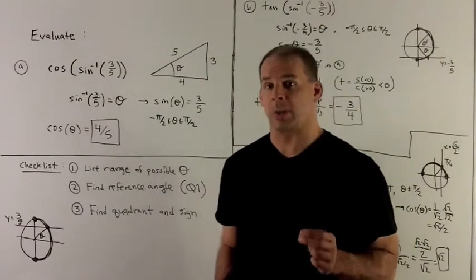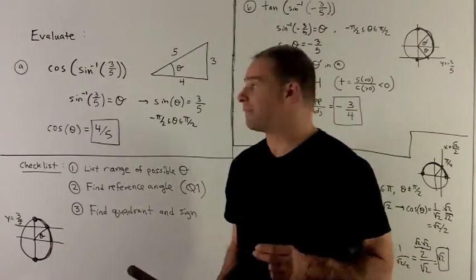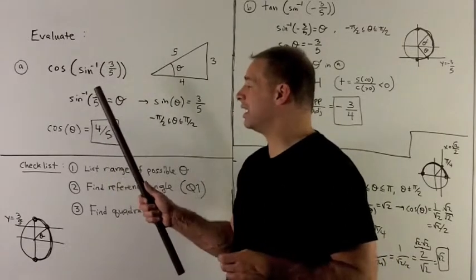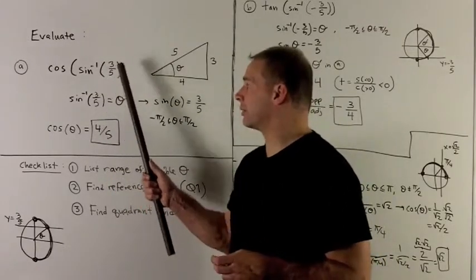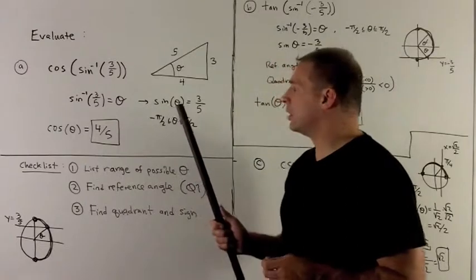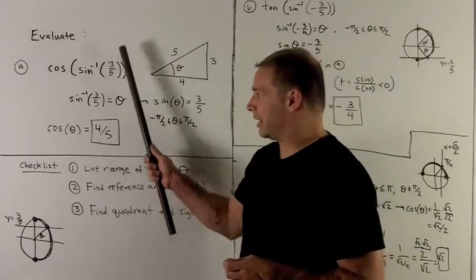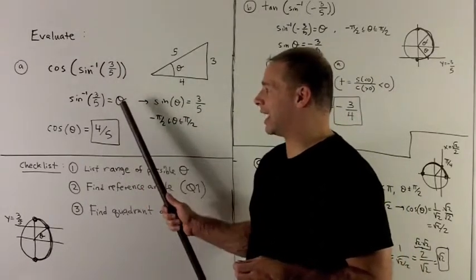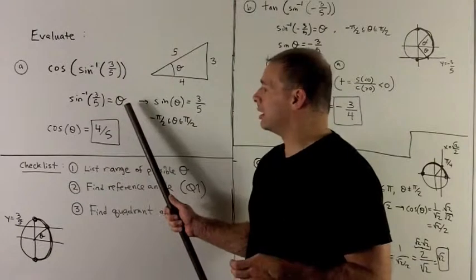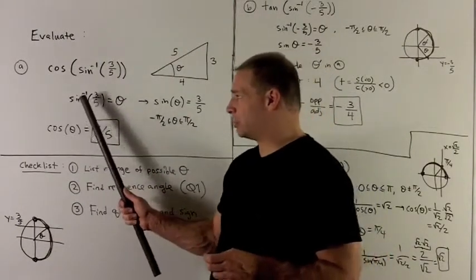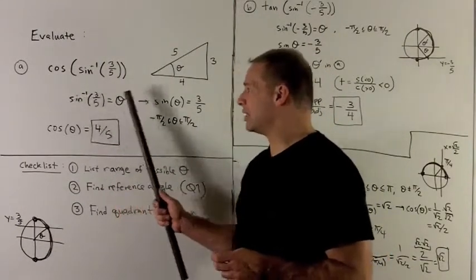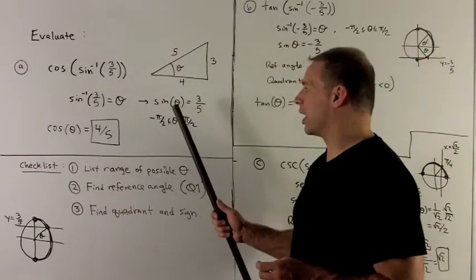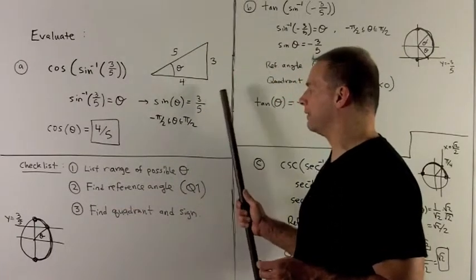Evaluate the following trig expressions. For my first expression, I have cosine of inverse sine of three-fifths. The way we start, we want to take the inside expression and set that equal to theta. A language trick lets us move the inverse sine to the other side as sine, so we'll have sine theta equal to three-fifths.